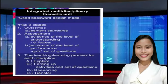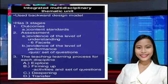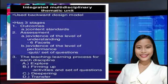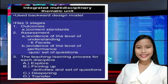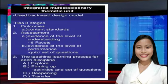This model has three stages. First is outcome: it has a content standard, which is the knowledge and skills students should attain — what students should know and be able to do. Second is assessment: the evidence of the level of understanding and the evidence of the level of performance.